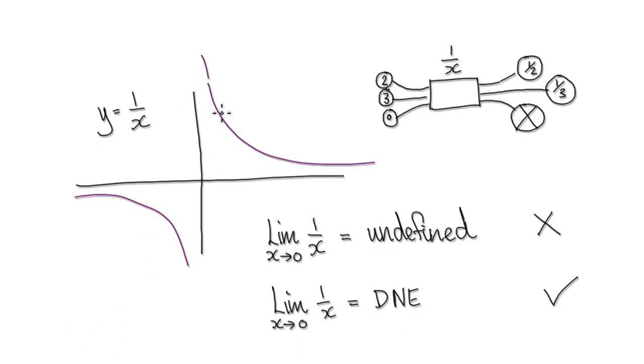If you look at 1 over x, the graph looks like this. So when I ask you, what's the limit of this graph, 1 over x, as x heads towards 0? You've got to head towards 0, one shoots down and the other one shoots up.